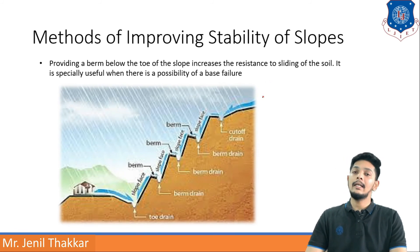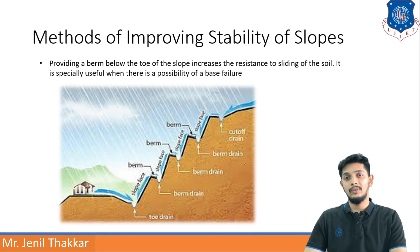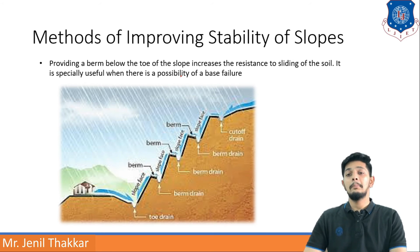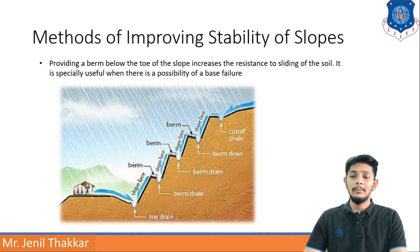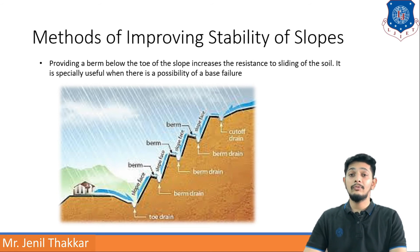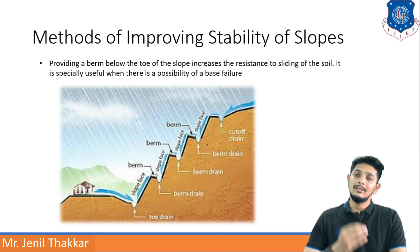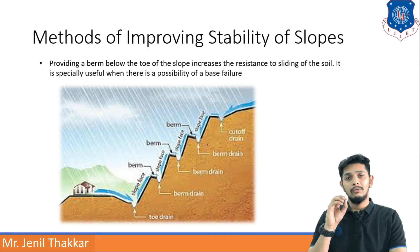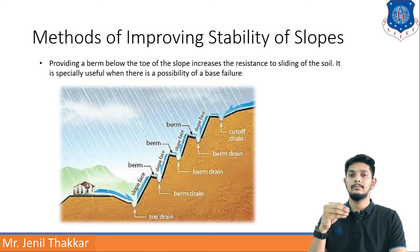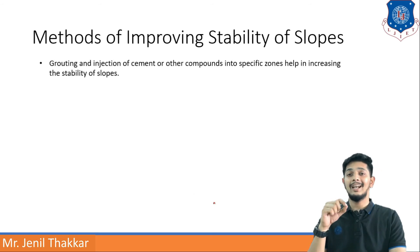Providing a berm below the toe of the slope increases resistance to sliding of the soil. For a steep slope prone to base failure, berms can be provided below the toe. One slope section can include a toe drain, berm drain, and cutoff drain, dividing the slope into parts so water movement is controlled and chances of failure are reduced.